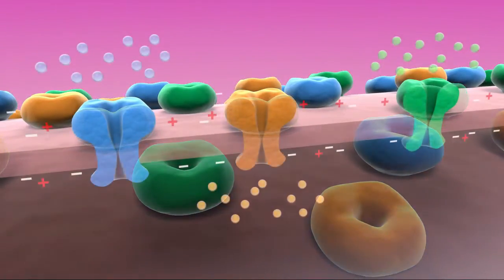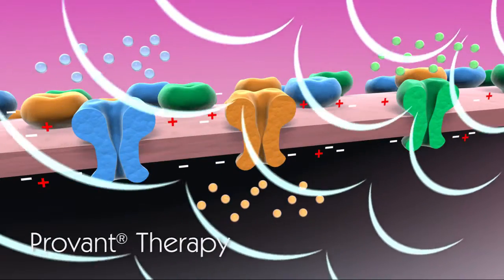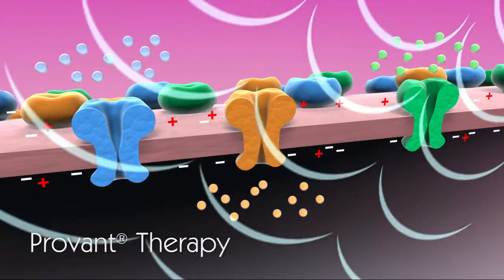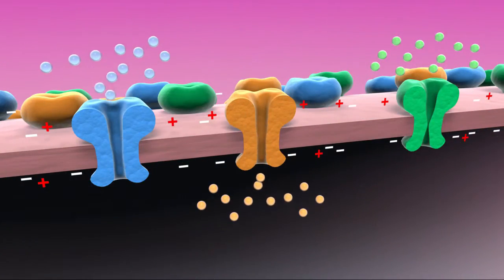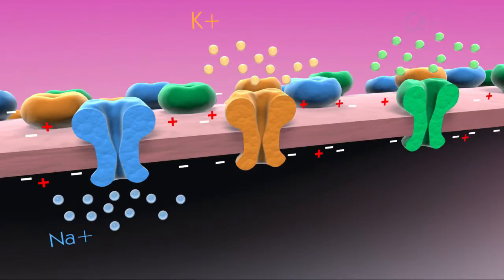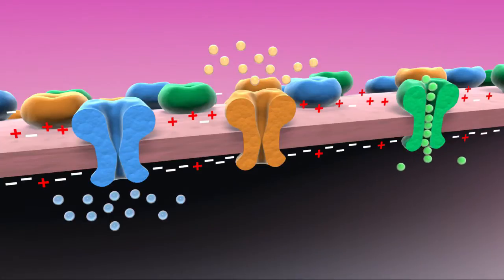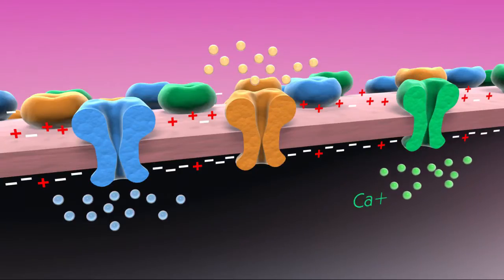Our findings show that the Provant electromagnetic field changes ion gradients on the cell membrane, influencing the movement of potassium, sodium, and calcium ions across the cell membrane. These movements change the membrane potential, which activates secondary messenger systems and effectively acts as the receptor for Provant therapy.